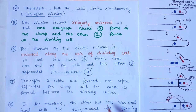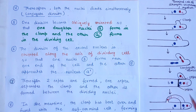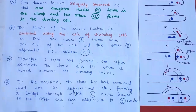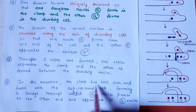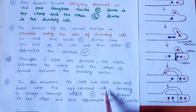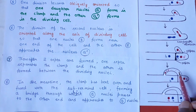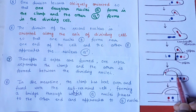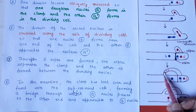In the meantime, the clamp has bent over. The clamp cell bends, and after bending, the clamp touches the sub-terminal cell and the wall dissolves. The nucleus in the clamp then passes to that portion. The clamp has bent over and fused with the sub-terminal cell, forming a bridge through which nucleus A passes to the other end and approaches nucleus B. After septa formation, this is the terminal cell, and this is the sub-terminal cell. The clamp-like structure bends and fuses with the sub-terminal cell.